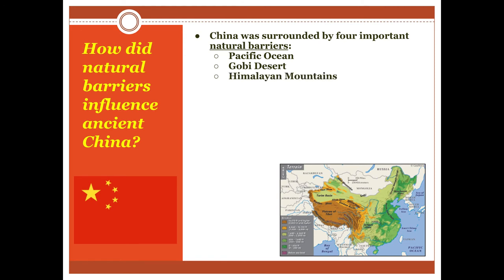The next natural barrier was the Himalayan Mountains, which just happen to be the largest mountain range on the face of the earth. The Himalayan Mountains were virtually impossible for anybody to cross back in those days. These days we pretty much use airplanes, but you really have to be very serious about trying to get into China by crossing the Himalayas — otherwise it's virtually impossible.